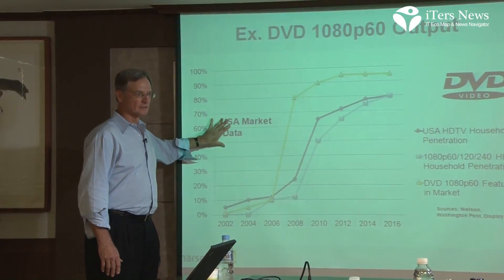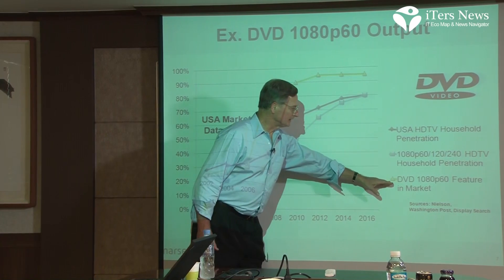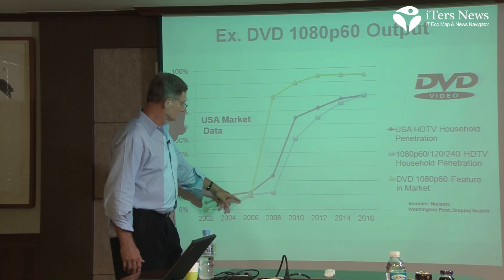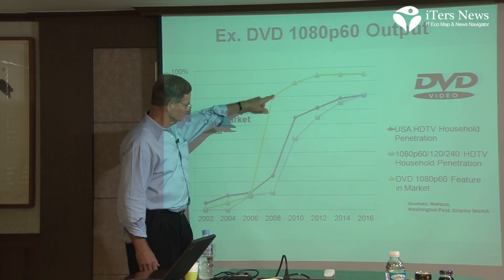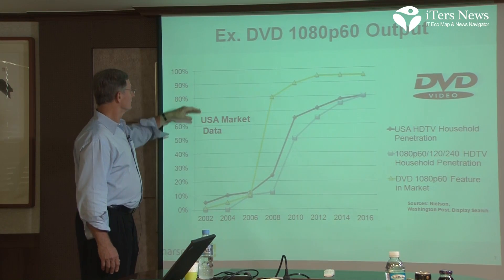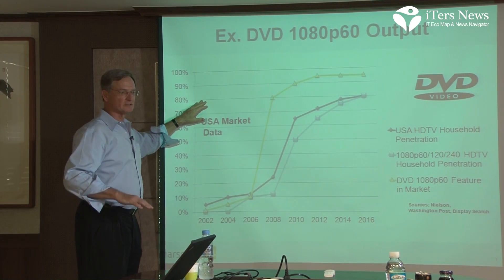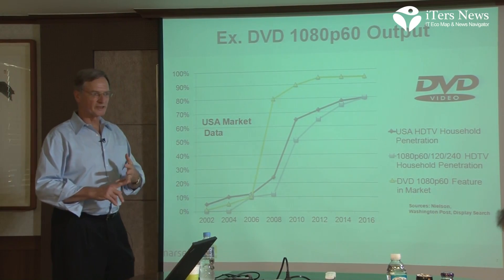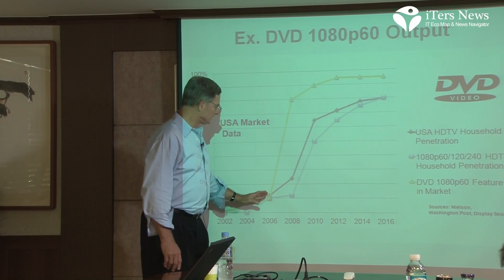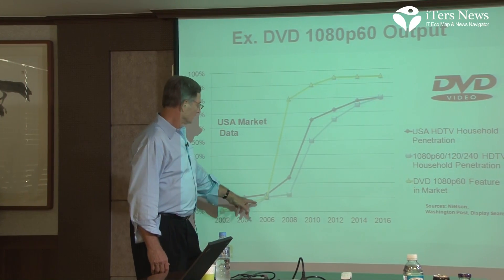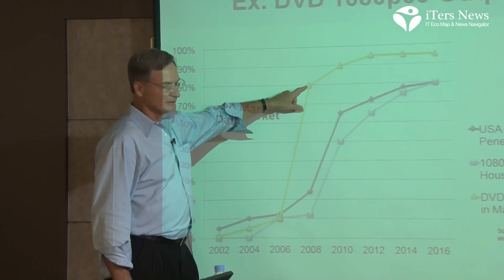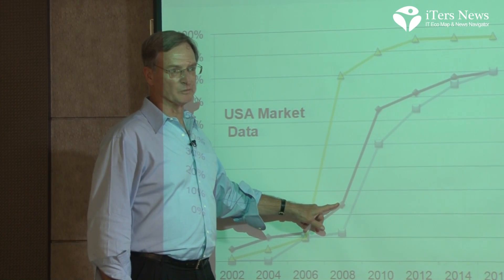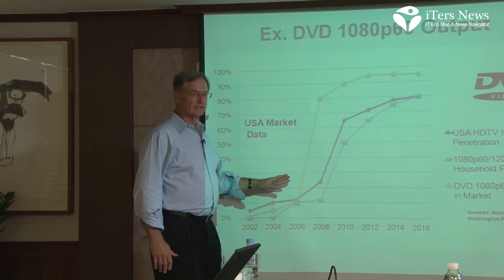This is US market data. What it shows is that the DVD 1080p 60 frame-per-second feature in source devices from 2006 to 2008 went from about 10% to 80% — a rapid transition of the market adopting this technology within set-top boxes, Blu-ray players, and AVRs. The TVs, in fact, lagged quite a bit. By the time they were shipping 80% in the source devices, TV sales for HD were only about 25% of the market.